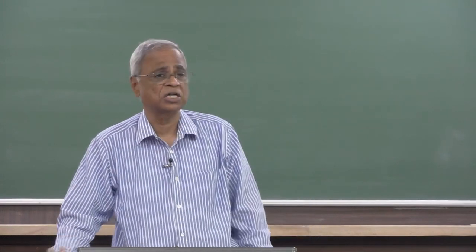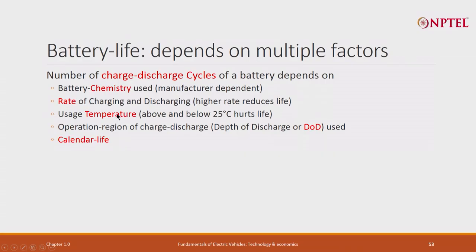The second factor is rate of charging and discharging. Whenever you charge fast, it impacts the life of the battery. If charging time is 5, 6, or 7 hours, you get maximum life — and if you charge at 25 degrees centigrade or close to that. But in reality that is not always possible, so the rate of charging and discharging — not just charging but discharging too — matters. Discharging very often cannot take 7 hours; at times I will start discharging faster.